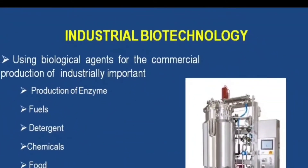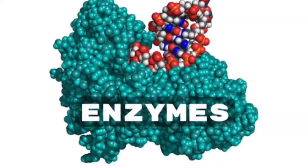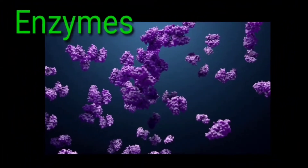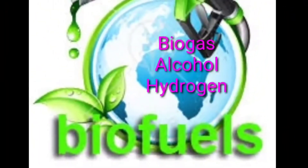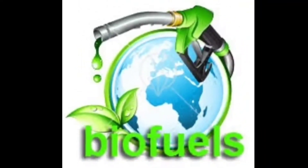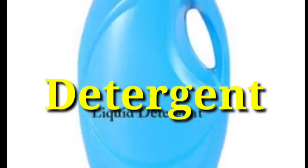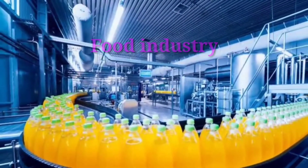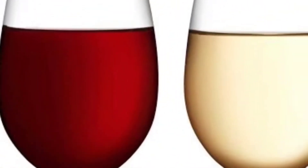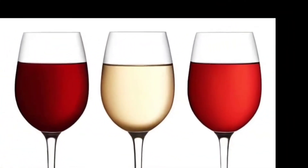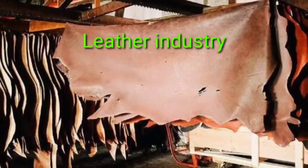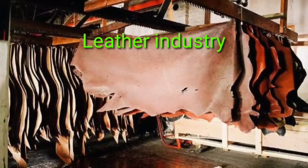That is industrial biotechnology. In industrial biotechnology, biotechnology is applied to produce industrially important enzymes. It is also used for synthesizing biofuels like ethanol and biogas, and for synthesizing bio-detergents. Biotechnology also has a role in the food and soft drinks industry, the beverage industry, the paper industry, the leather industry, and several other industries.